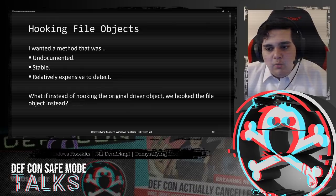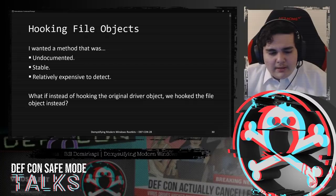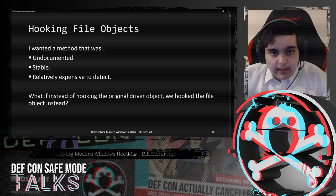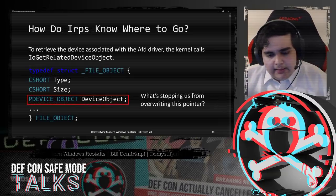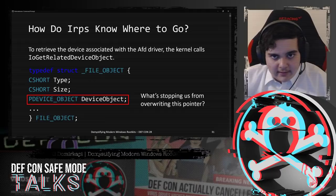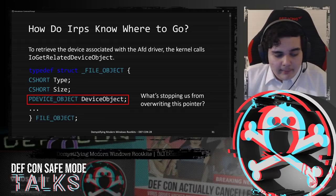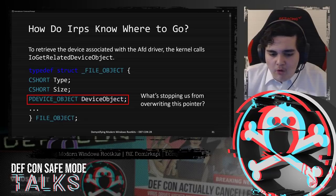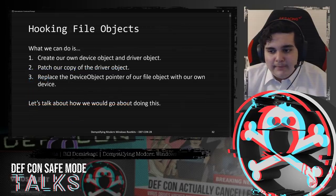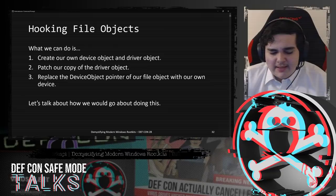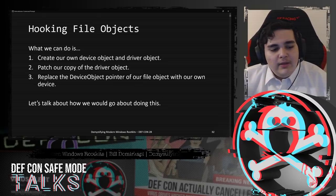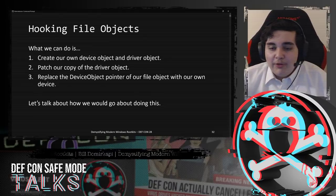I wanted a method that was undocumented, stable, yet relatively expensive to detect. What if instead of hooking the original driver object, we hooked the file object structure instead? If you recall, the kernel determines what device is associated with a file object by calling IoGetRelatedDeviceObject, which retrieves the device object member of the file object structure. What is stopping us from overriding this device object pointer inside of the file object with our own device? It turns out, absolutely nothing. So we can create our own driver and device objects, patch our copy of the driver object using a common method such as replacing the major function table, and then replace the device object pointer inside the file object with our own device.